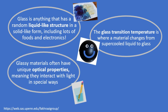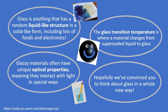After that, Shiv showed us that glassy materials often have unique optical properties, meaning they interact with light in special ways and can even make test tubes appear invisible. Hopefully today we've convinced you to think about glass in a whole new way. On behalf of the Fockeye Lab at the University of Pennsylvania, thank you for watching our demos.